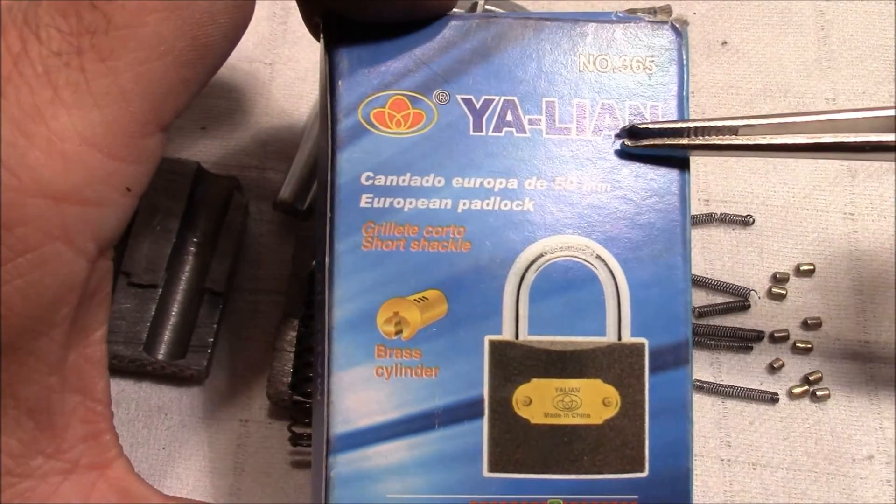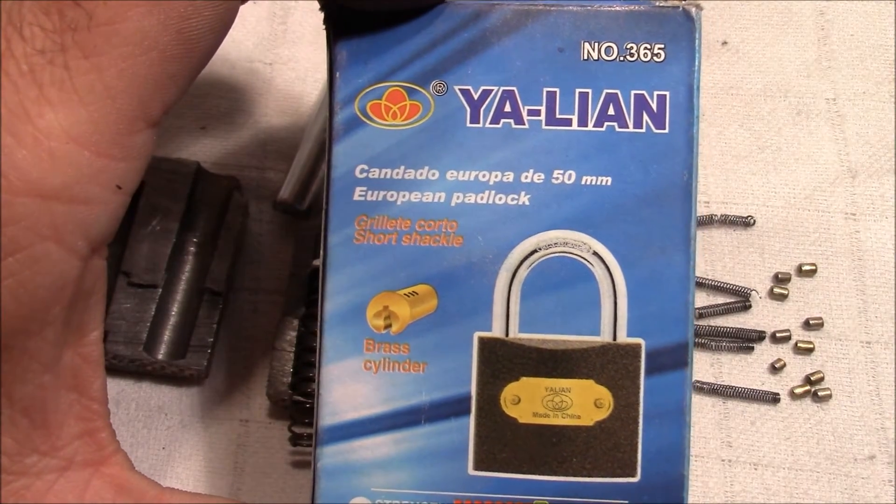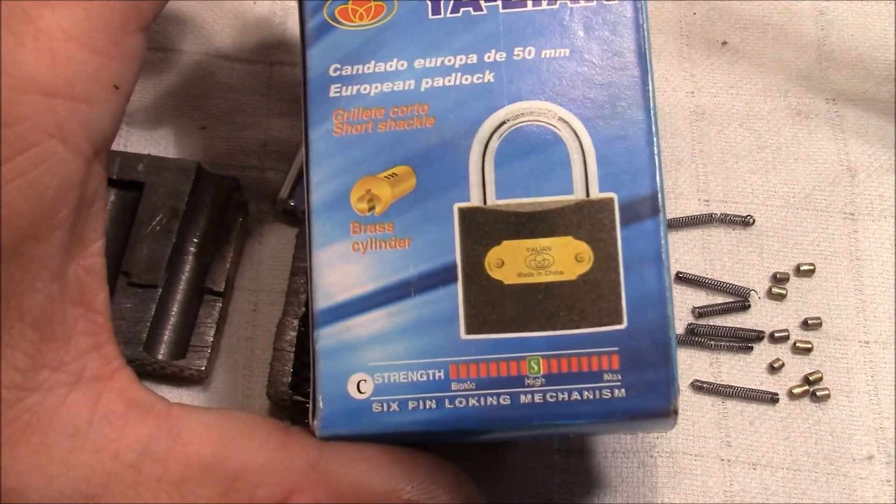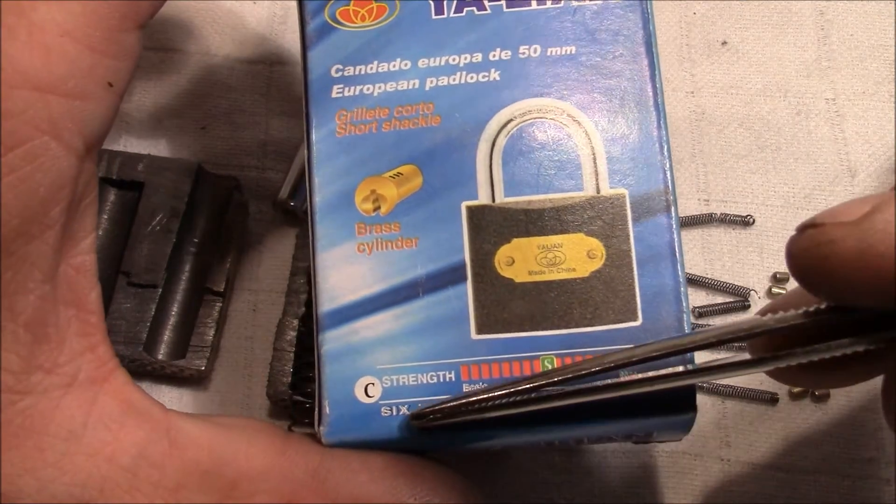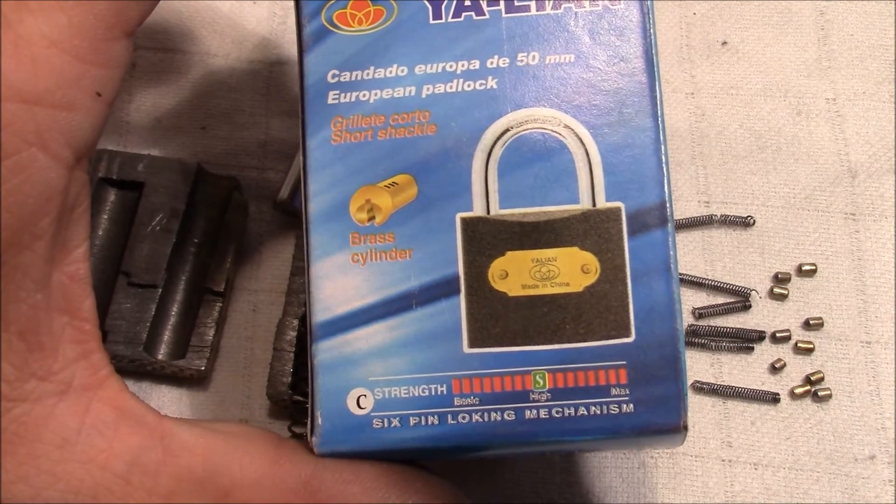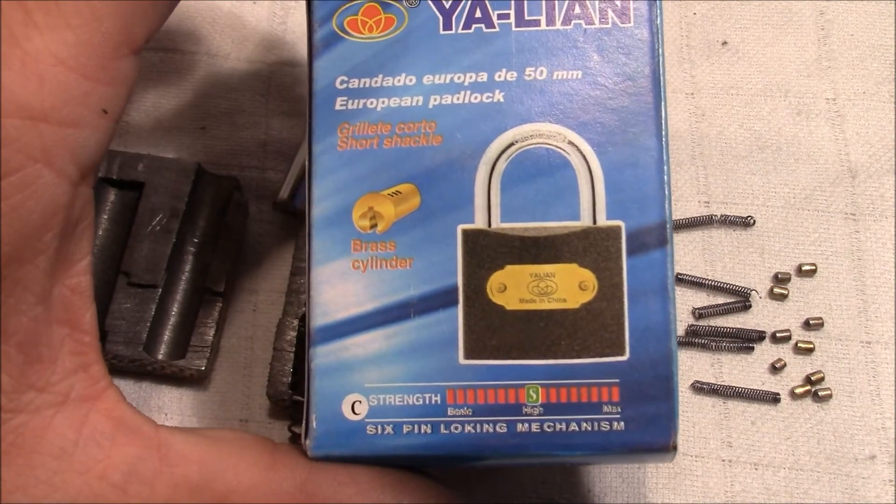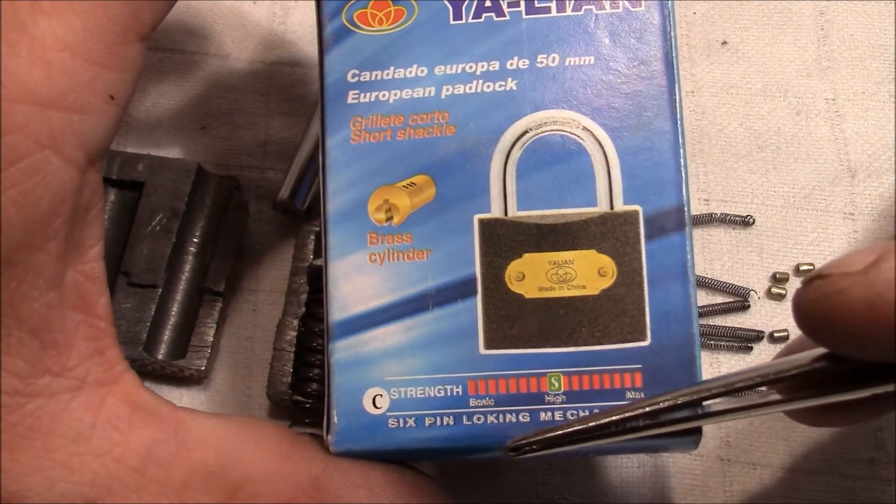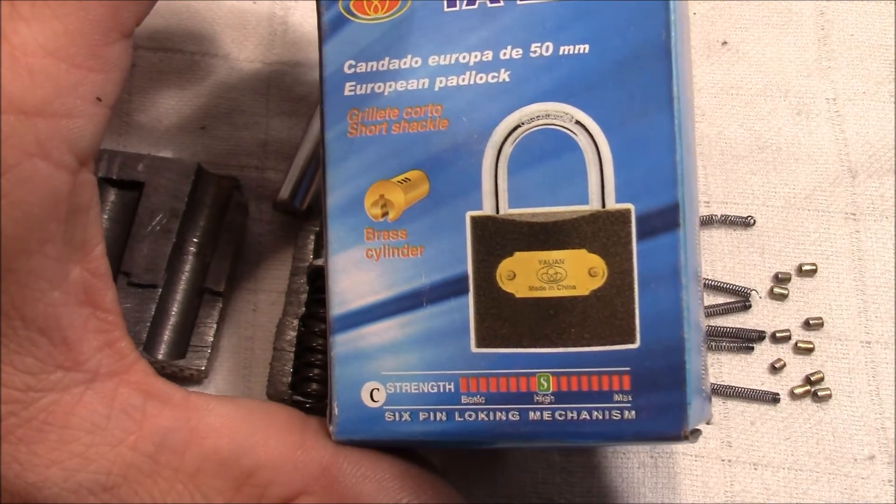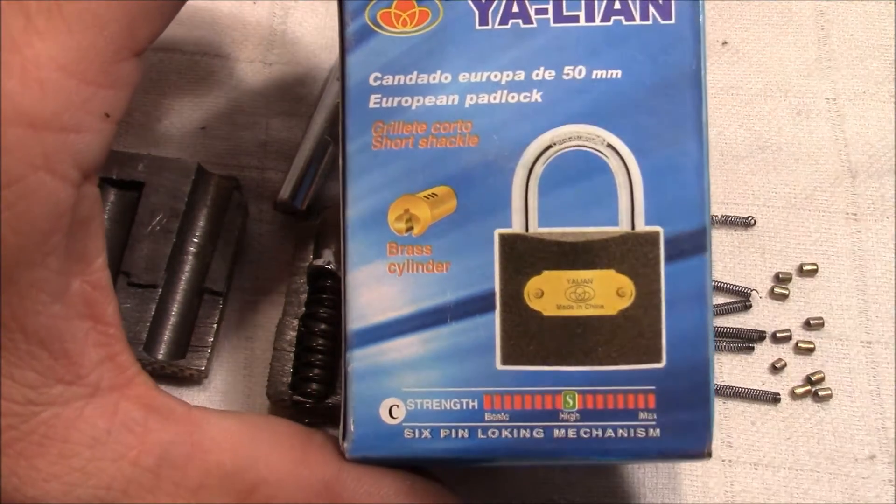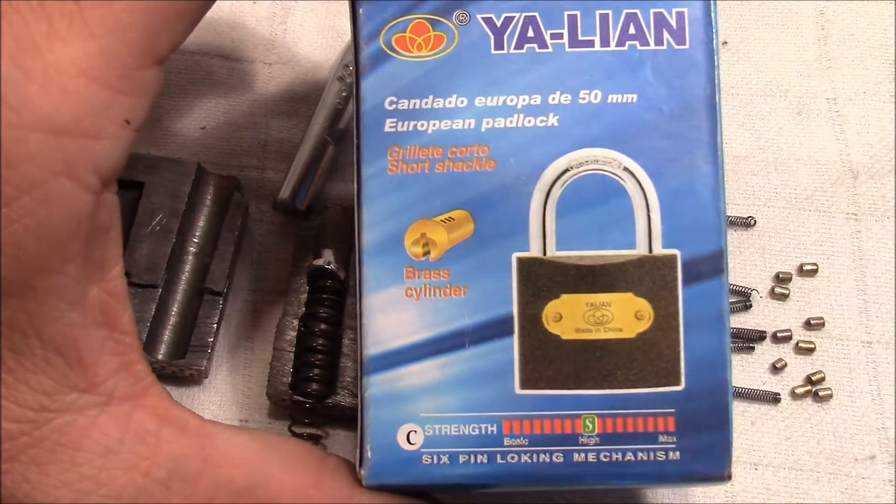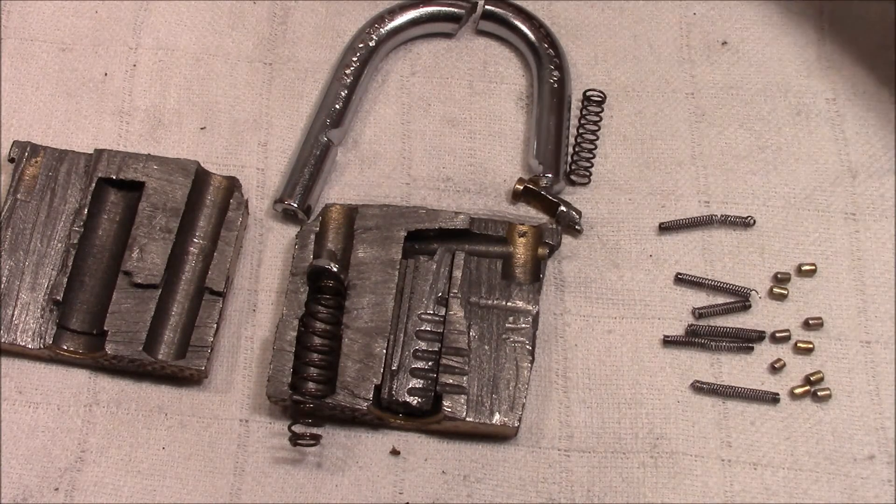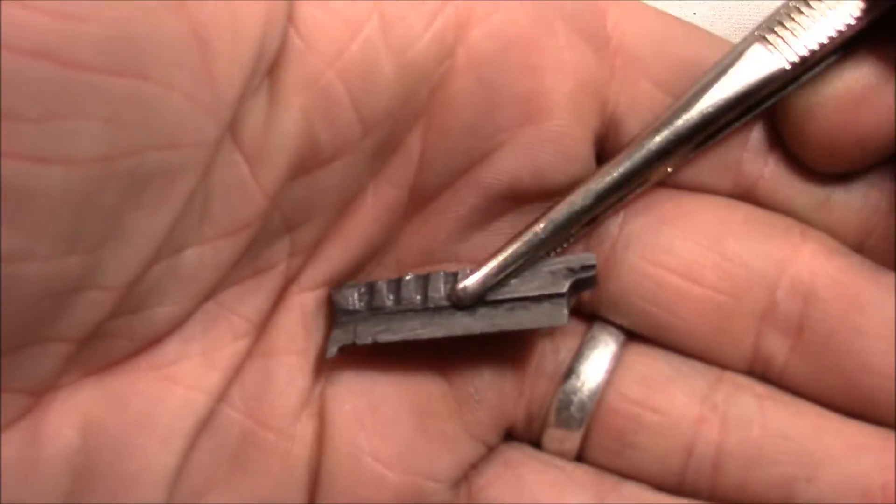A little bit of mess but you can get the idea. We have five key pins and five driver pins and six springs, so the sixth spring is for the retaining pin. But on the package which is Yalian, the same name as printed on the lock, everything else is not true. The picture is not true. It's not a six pin locking mechanism. Maybe if you count the retaining pin then it's six pins, but it's not a six pin locking mechanism. And we don't have a brass cylinder. This is obviously not brass.